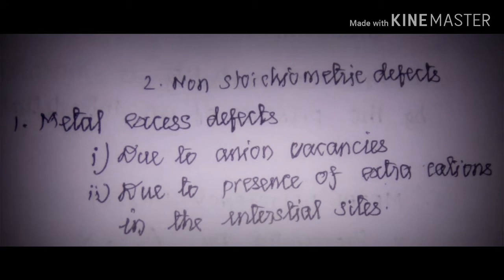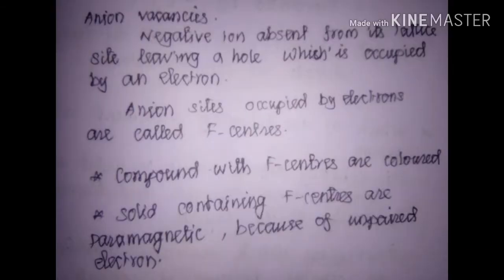Non-stoichiometric defects are of two types: metal excess defect and metal deficiency defect. In metal excess defects, metals are in excess relative to the anions. The extra cations take interstitial positions in the crystal. A negative ion is absent from its lattice and this position is occupied by an electron to maintain electroneutrality. Since vacant sites are occupied by electrons, it creates F-centers.